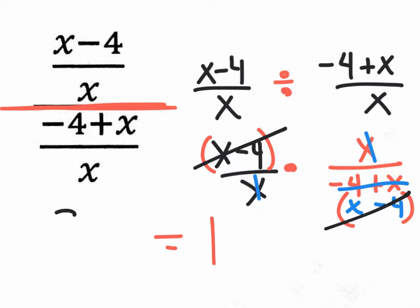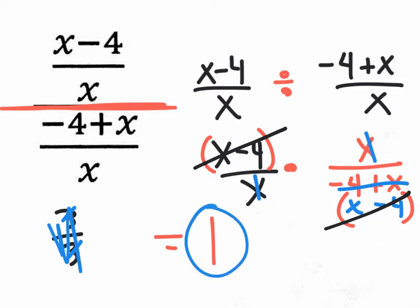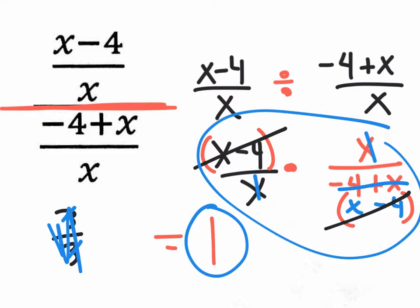Why 1? Because when everything cancels out, your answer is 1. Think about it: if you had 3 divided by 3, the threes cancel and the answer is 1. So whenever everything cancels out, the answer is 1. Right here, everything canceled out, so the answer is 1.